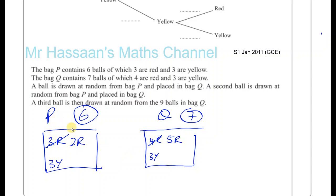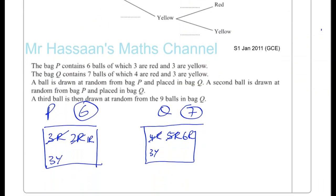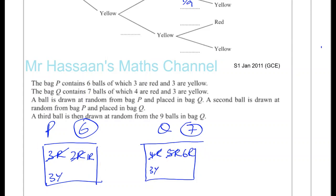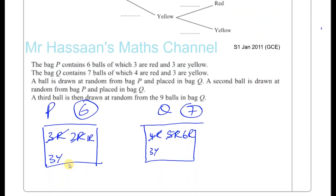Now we take another ball from bag P and put it into bag Q. If you've picked red first and red second from bag P and put both those red balls into bag Q, bag Q now has 6 reds. So the probability of picking a red ball from bag Q becomes 6 out of 9, and this must be 3 out of 9 for yellow — which makes sense because there are 3 yellows left out of 9 balls.